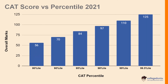Let's check the CAT score versus percentile in 2021. For the 80 percentile, the score was 56. For the 90 percentile, the score was 70. For the 95 percentile, the score was 84. For the 98 percentile, the score was 97.